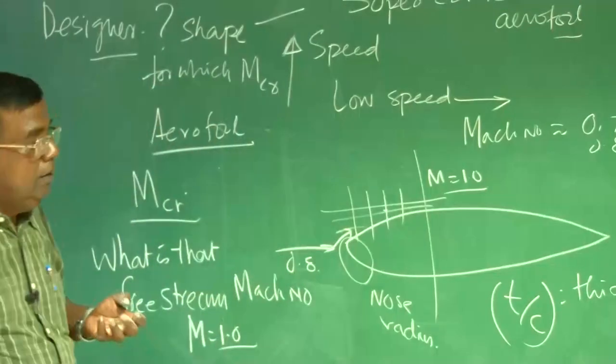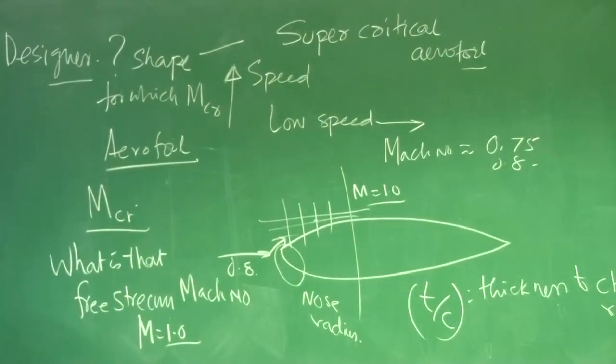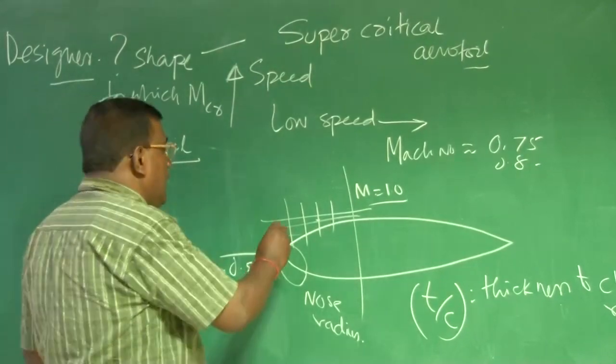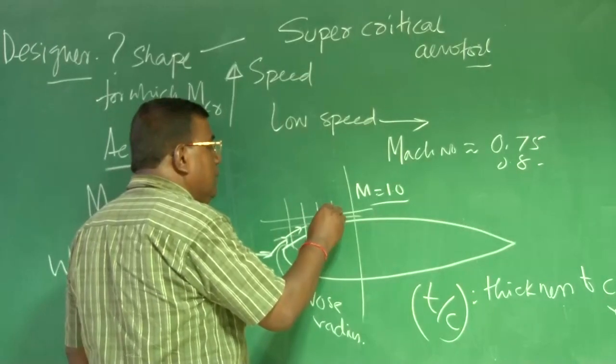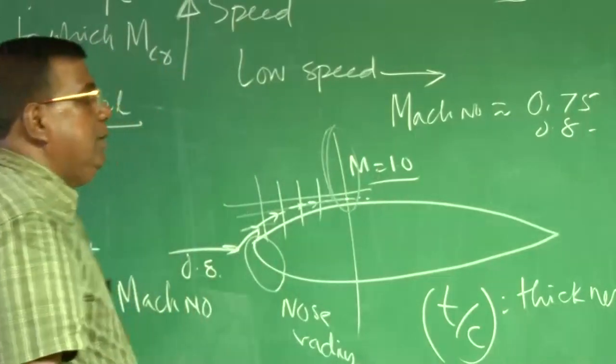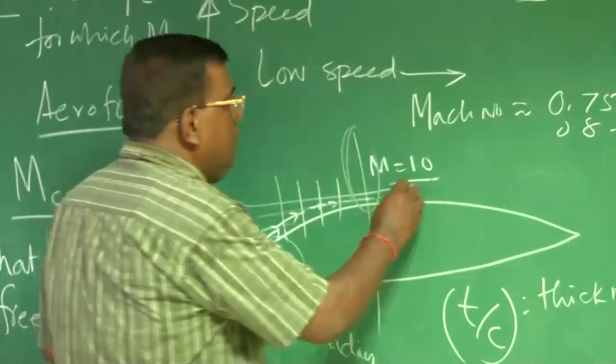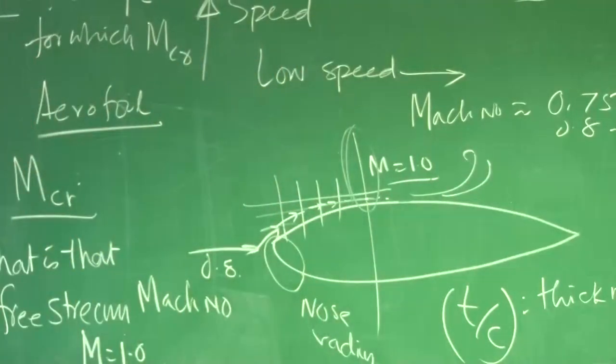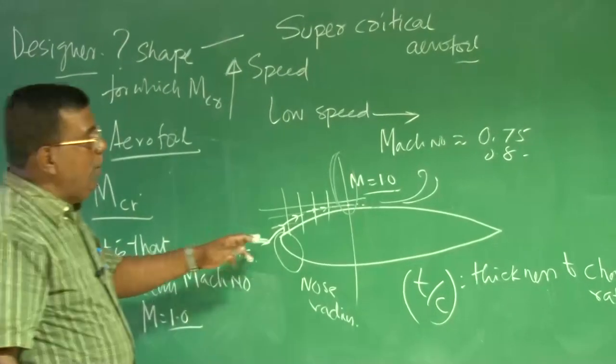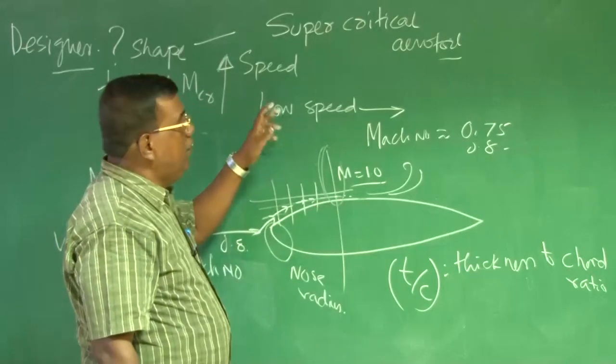Another important thing we will look from or expect from an aerofoil is at what angle is going to stall. That means, which you know very well, as flow accelerates here, the pressure drops and somewhere there is a generation of adverse pressure. Because of the adverse pressure gradient, the flow separates.